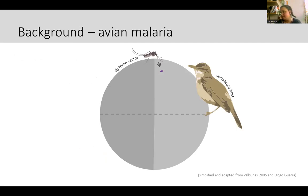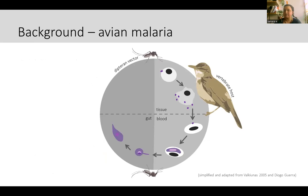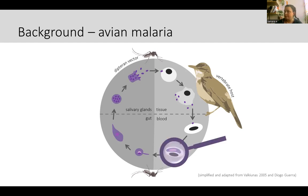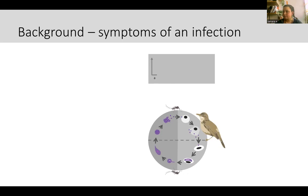To give some background: avian malaria and related parasites are transmitted by dipteran vectors. An insect bites a bird and transmits a parasite, which then develops asexually either in the blood or tissue, and at some point appears in the blood where it can be transmitted again by an insect bite. Within the insect, sexual reproduction takes place first in the gut, then moving to the salivary glands for transmission to another bird. What I mostly look at is blood samples — the blood stages — but it's important to know that if you look at a blood sample, you don't see everything because there is a whole tissue component we cannot see.